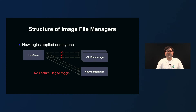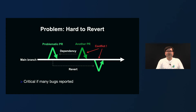But when we were ready to apply the new logic, instead of changing the file manager class using Feature Flag, we replaced them directly. If a critical bug is found during QA, it could be difficult to roll back with, for instance, revert. In our case, issues were reported, and these conflicted with ongoing refactoring changes — it was difficult for us to revert.